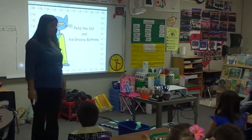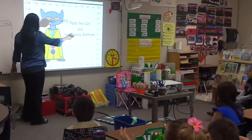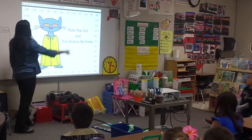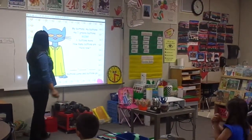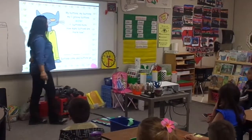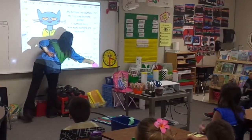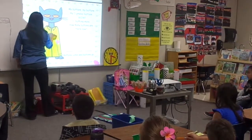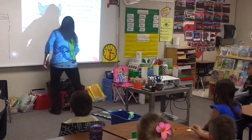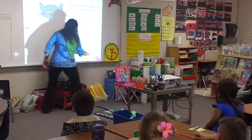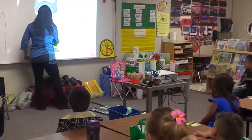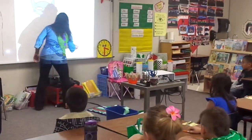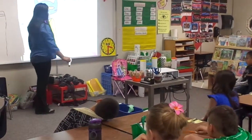Pete the Cat and his groovy buttons. He's Pete and he has a good button, and the buttons are getting lost. This is the blue cat. My learner's eyes over here. These are my buttons — my five groovy buttons. So I'm moving five buttons. How many buttons does he have? One, two, three, four, five. Five buttons.